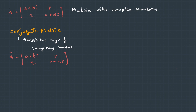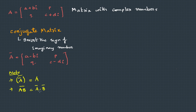A few points about conjugates: the conjugate of a conjugate matrix is the original matrix. For a product AB, the conjugate is A* times B* — the order does not reverse here because there is no transpose operation. The conjugate of A plus B equals A* plus B*.